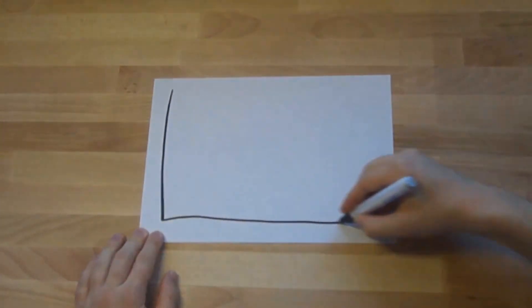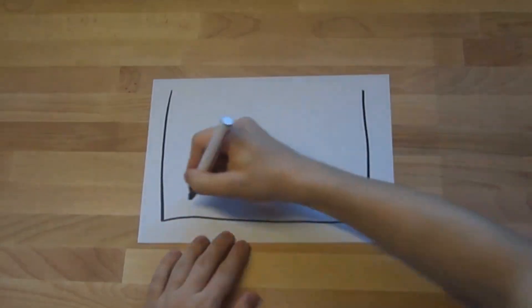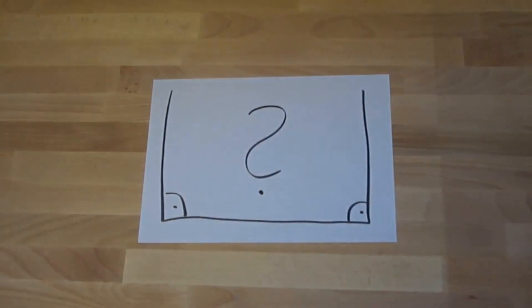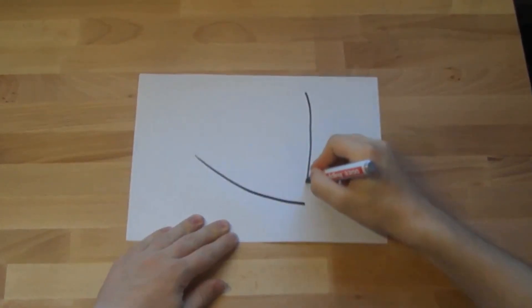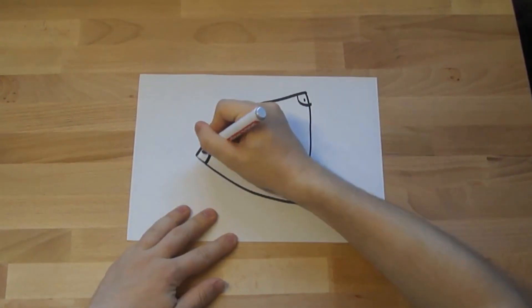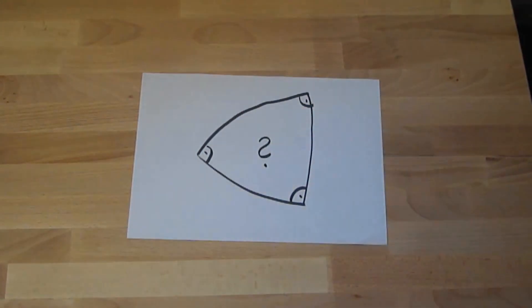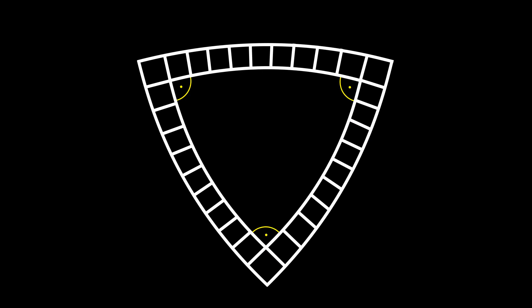Needless to say, that is completely impossible on a flat plane, unless you curve the track somehow, like this. But now, there is just no way to put a regular square grid inside a triangle.